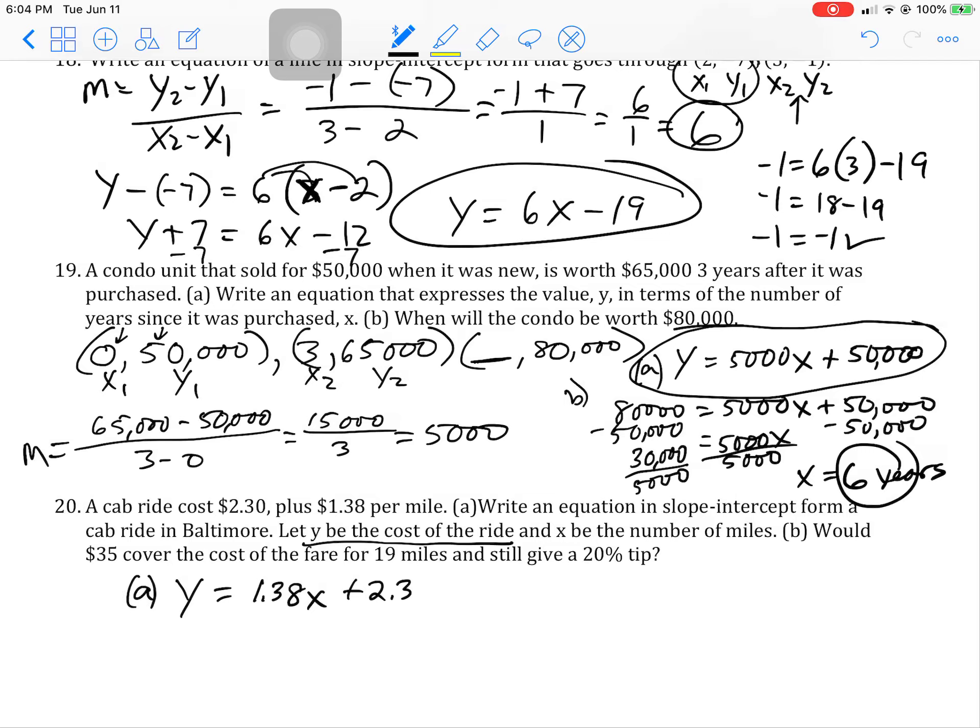And then it says, would $35 cover the cost of the fare for 19 miles and still give a 20% tip? So that's code for put in 19 for X. So how much is it going to cost you if you go 19 miles for just the fare? I believe that comes out to $28.52. Make sure you're multiplying first and then adding. Order of operations come into play there.